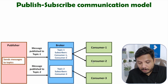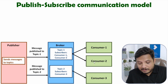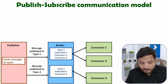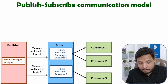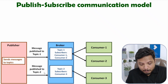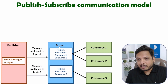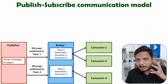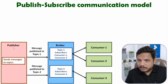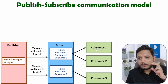Consumer 1 and consumer 2 have subscribed to topic 1, and consumer 3 has subscribed to topic 2. As and when a message is published by the publisher, that message will be received by the consumer as per the subscription. For example, if topic 1 has some message, that message will be forwarded by the broker to consumer 1 and consumer 2. If topic 2 receives a message from the publisher, it will be forwarded to consumer 3. The broker manages all the topics and consumers receive messages based on subscription.